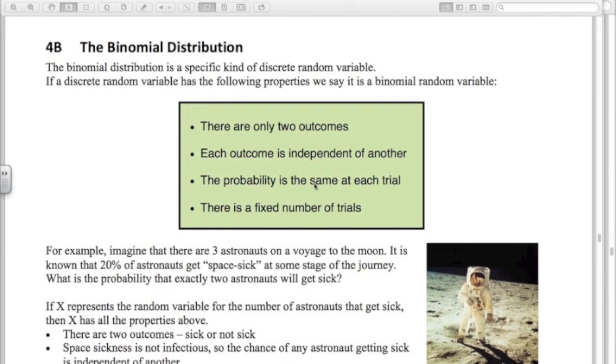Hi, and welcome to this video where we're going to be talking about the binomial distribution. The binomial distribution is a specific kind of discrete random variable that satisfies these four conditions you can see. You need to know these four conditions, so let's talk about them.